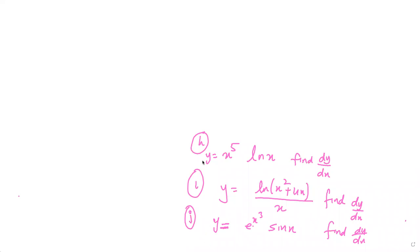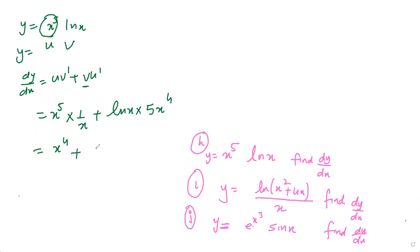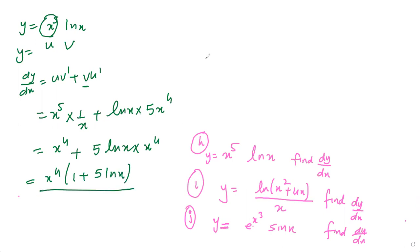Parts h, i, and j combine product and chain rule. For part h: y equals x⁵ ln(x). Applying the product rule, dy/dx equals u·v' plus v·u'. So it's x⁵ times 1/x plus ln(x) times 5x⁴, which simplifies to x⁴ plus 5 ln(x) times x⁴. Taking x⁴ common gives x⁴(1 + 5 ln x).